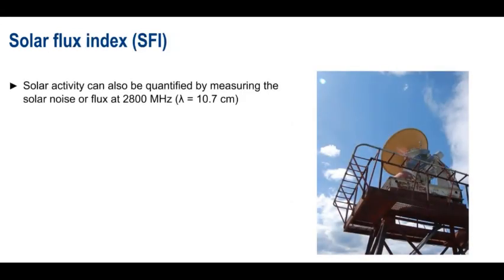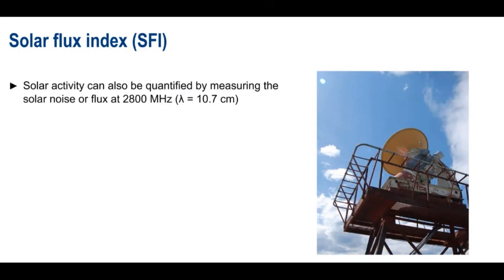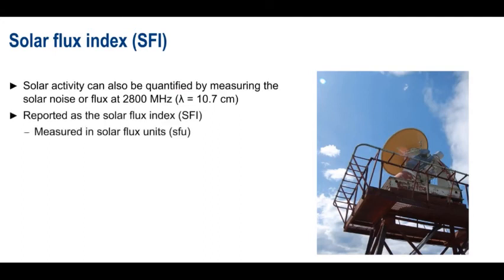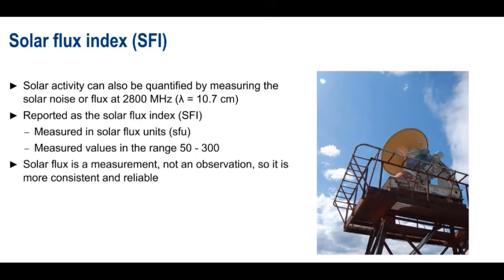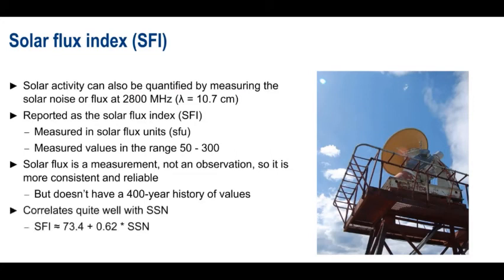We can also quantify solar activity by measuring the level of solar noise, or flux, at a frequency of 2800 MHz. These measurements are reported as the solar flux index, with values given in so-called solar flux units. Measured solar flux values generally fall in the range of about 50 during a solar cycle minimum to about 300 during a solar cycle maximum. Since solar flux is a measurement, not an observation, it tends to be more consistent and reliable than sunspot number, but it also doesn't have the same 400-year history of values. However, solar flux values tend to correlate quite well with sunspot numbers. Like sunspot number, higher values of solar flux mean higher maximum usable frequencies and better HF propagation.